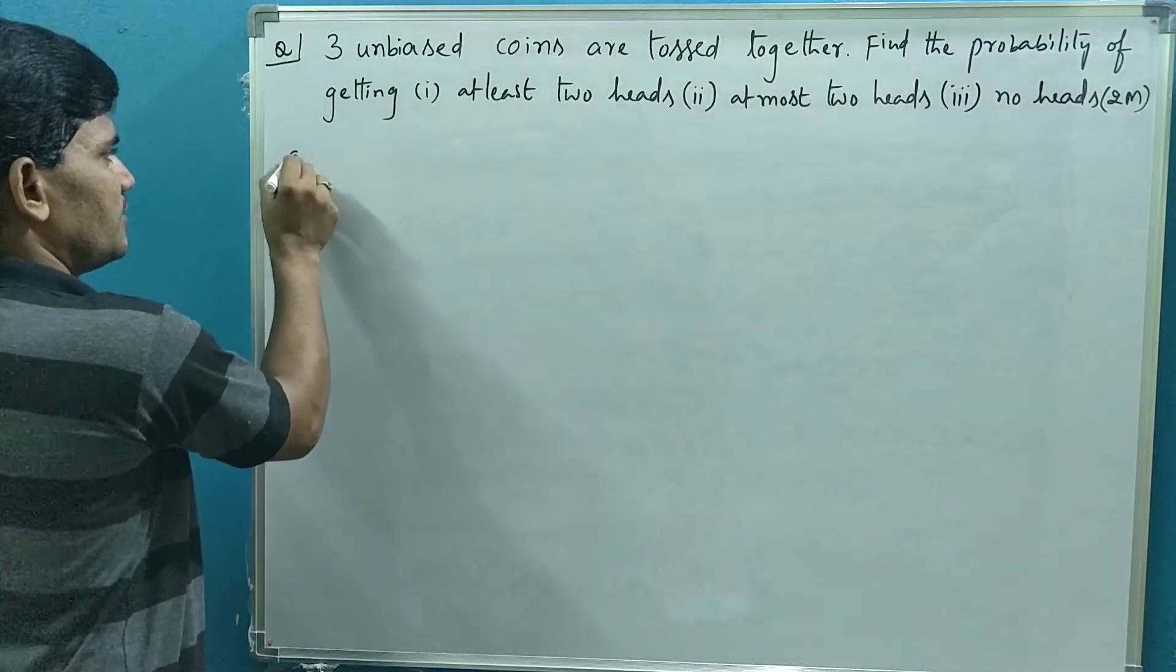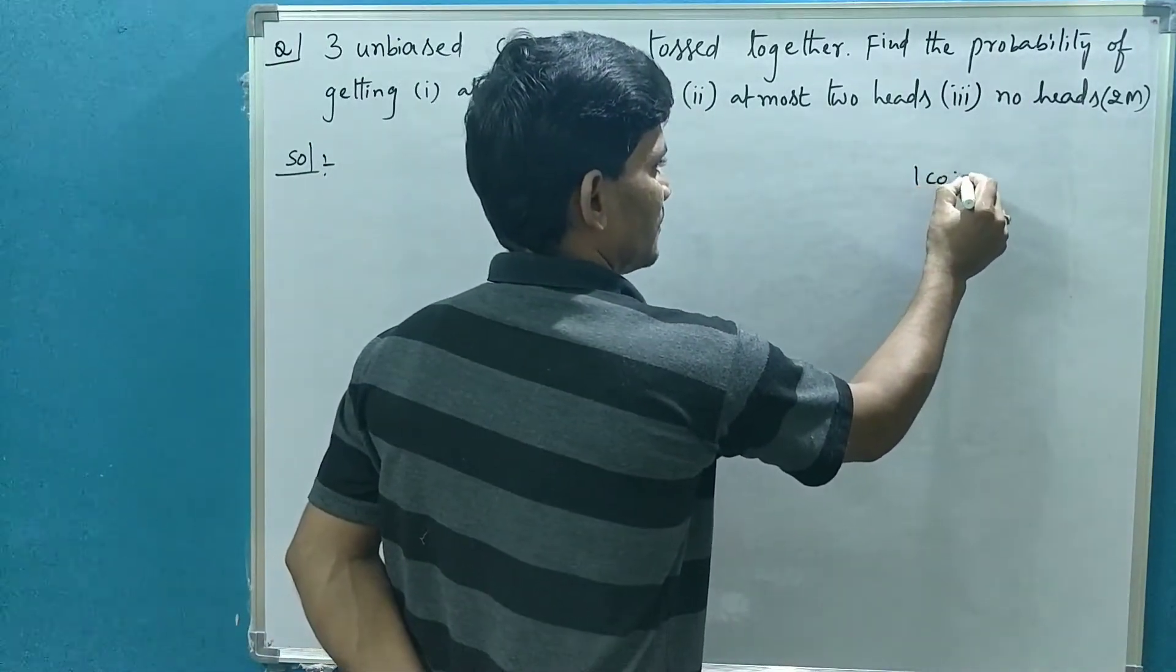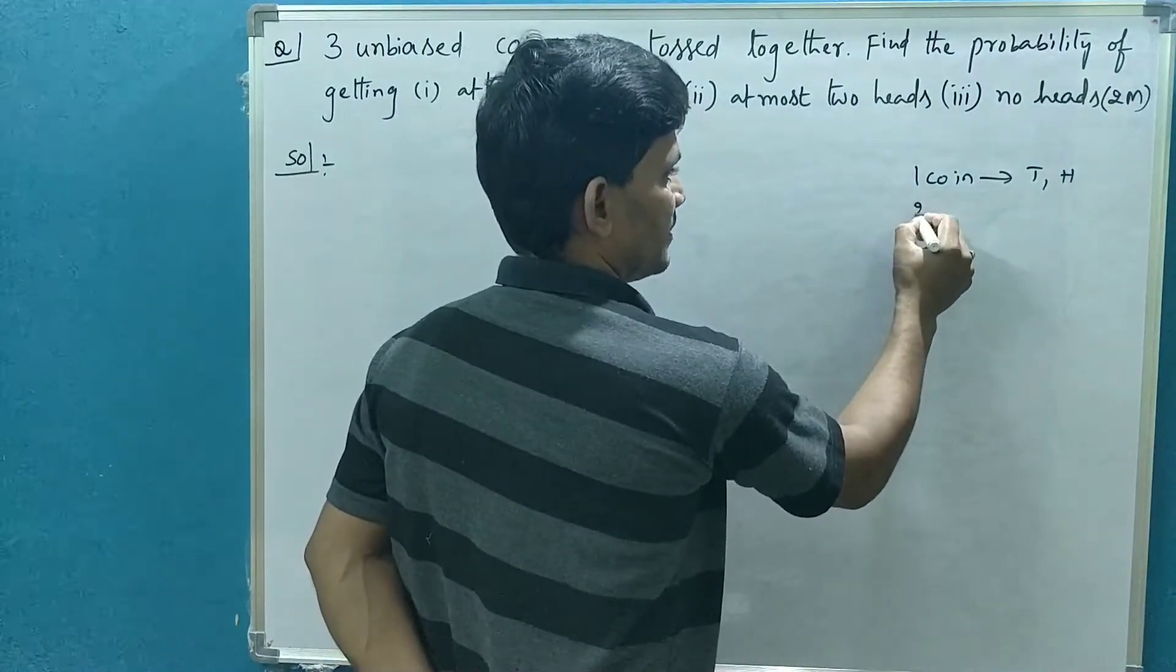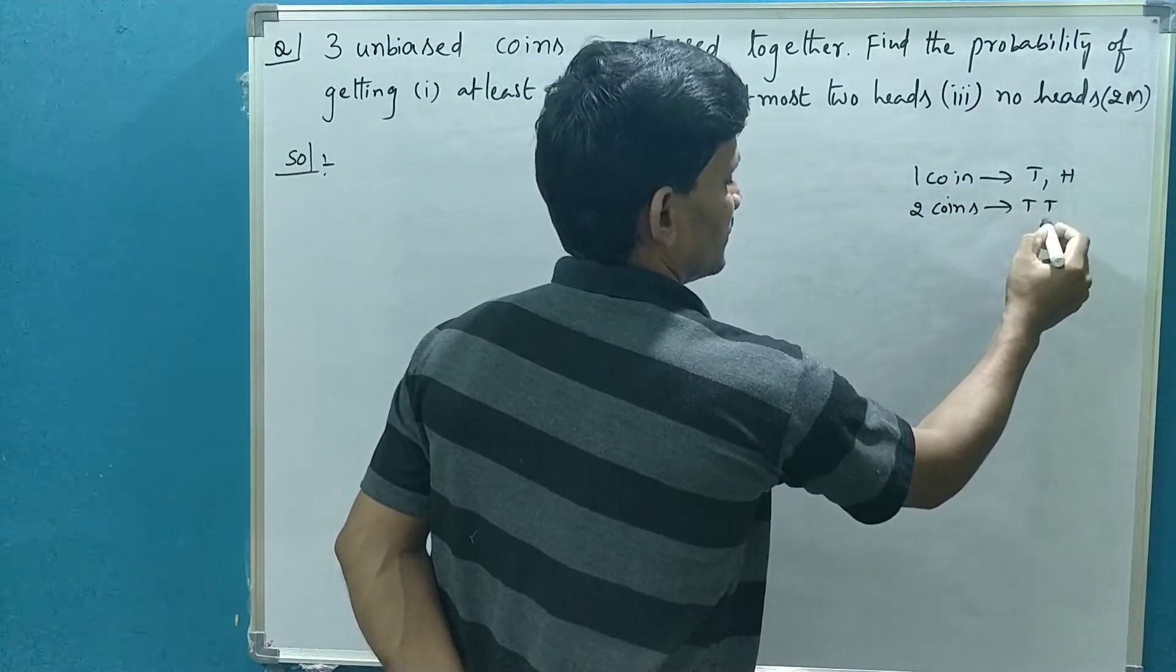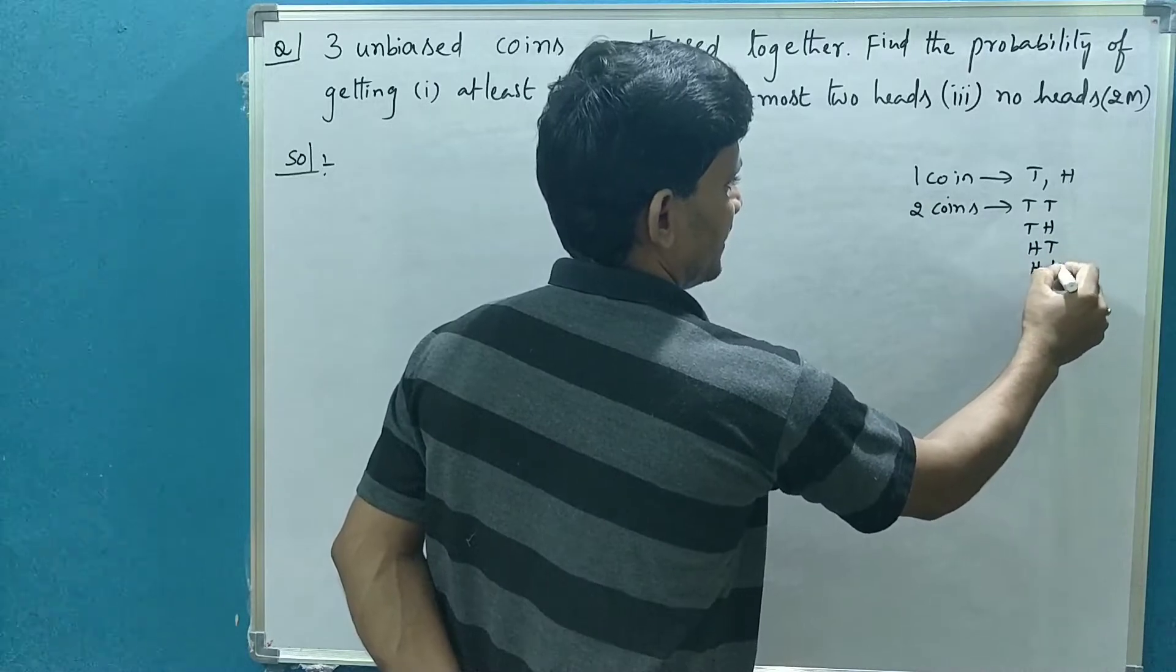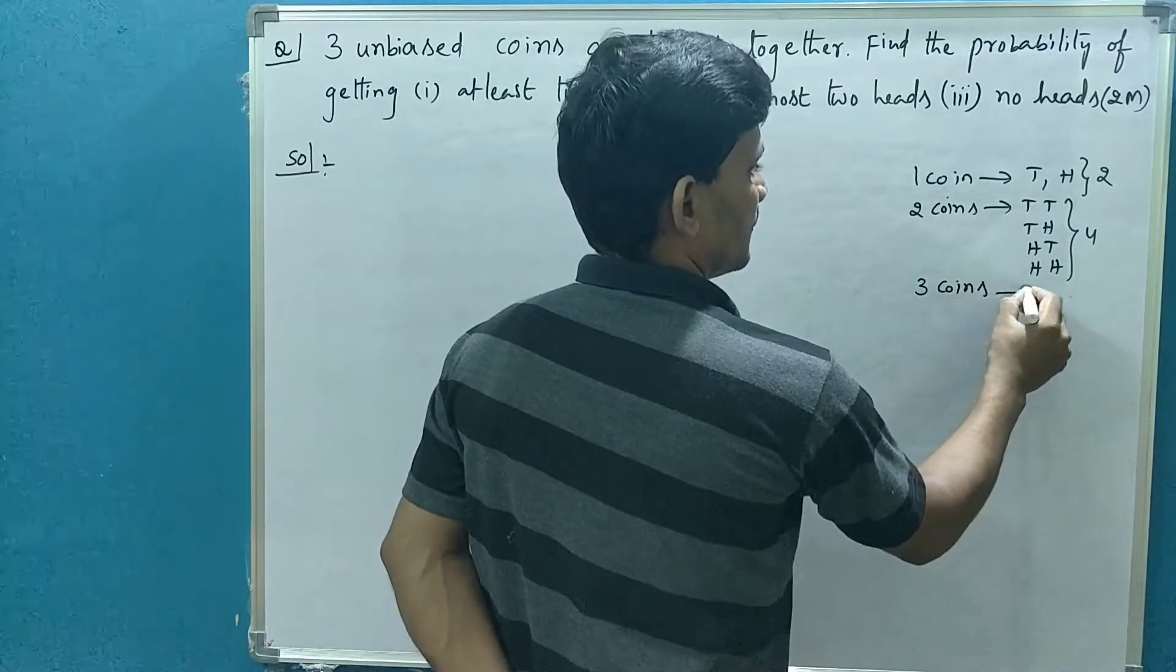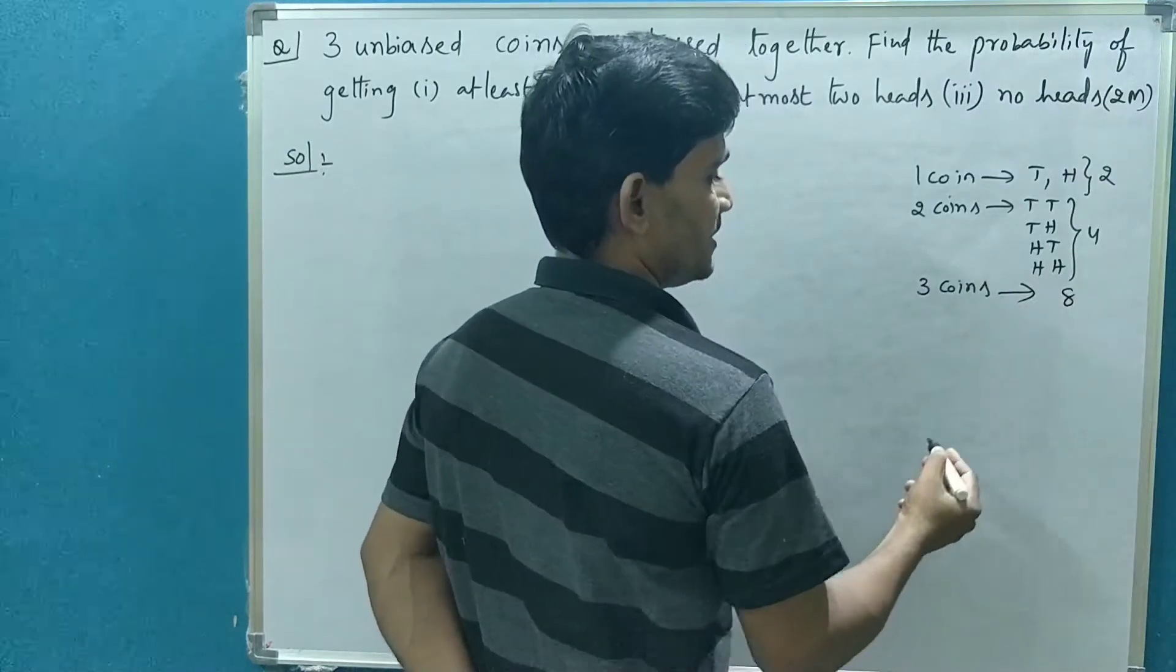Let us go for the solution. When one coin is tossed, you will get two possibilities, two outcomes are possible: tail or head. When two coins are tossed together, tail tail, tail head, head tail, head head, which means four outcomes are possible.